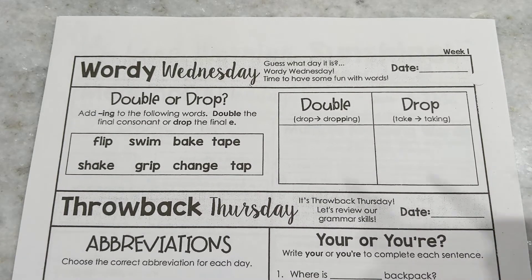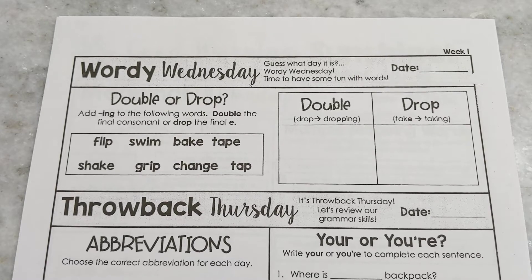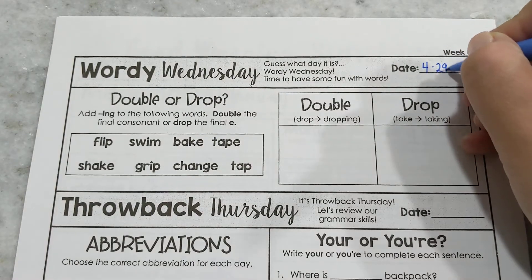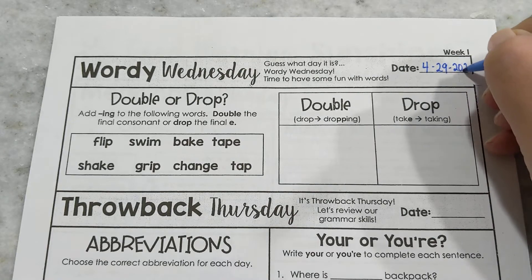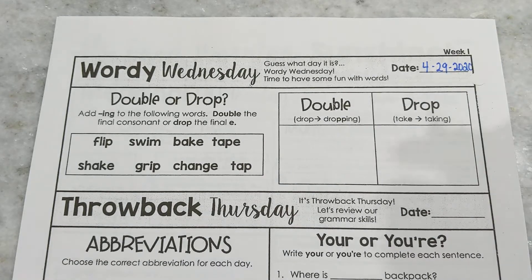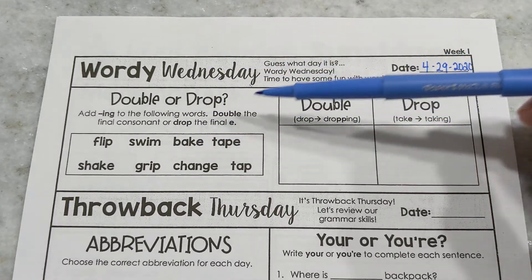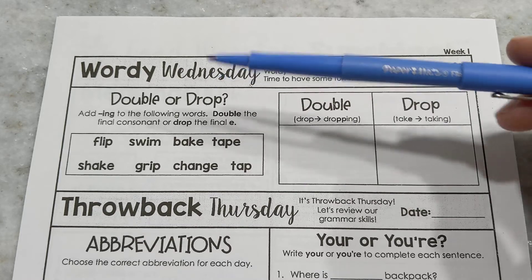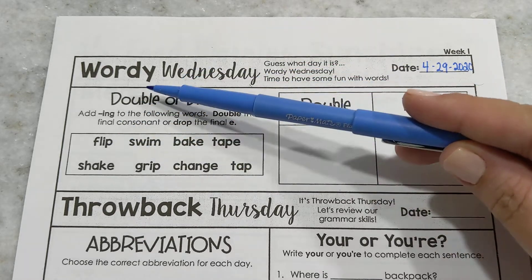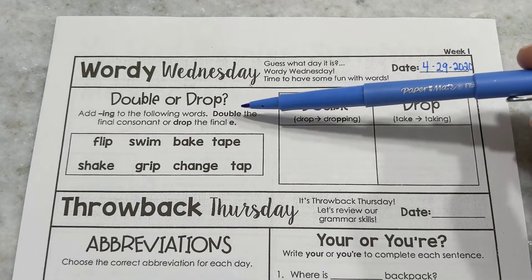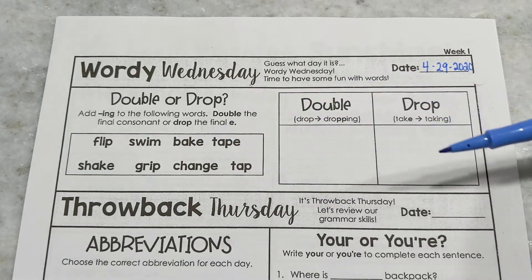Good morning, third graders. I miss you. It is Wednesday, April the 29th of 2020. Wishing we were together today. Let's talk about Wordy Wednesday. Today we're going to be talking about adding suffixes to words and whether or not you double the consonant or drop the final e to add your suffix.